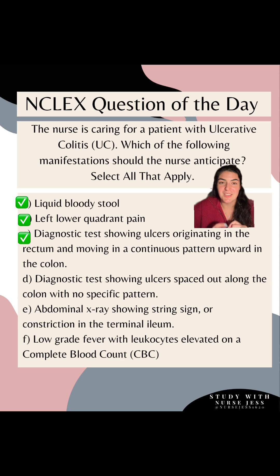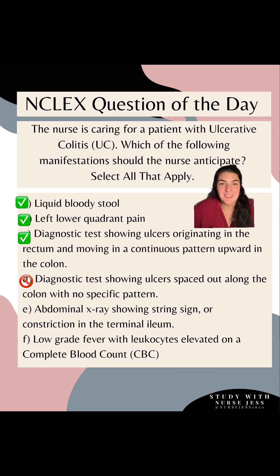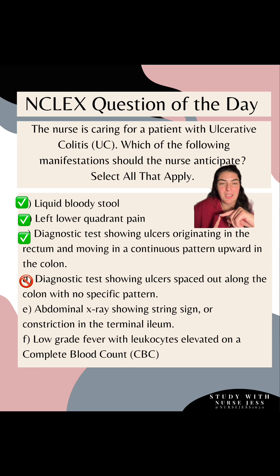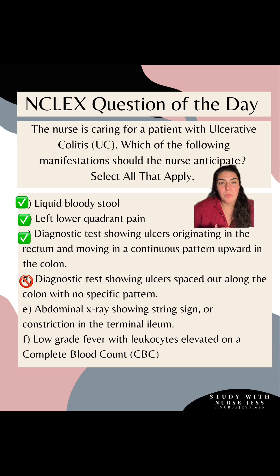This is really important because this is how you start to differentiate ulcerative colitis from Crohn's. Option D: diagnostic test showing ulcers spaced out along the colon with no specific pattern — this is incorrect for ulcerative colitis. This is actually diagnostic of Crohn's; they refer to it as a cobblestone appearance. UC is a continuous ulcer from the rectum moving up, which explains the liquid bloody stools. Crohn's is more of a patchy ulcer throughout the colon, so you might see liquid bloody stools in Crohn's, but you might not.